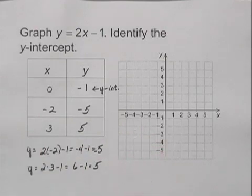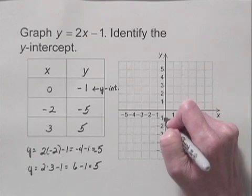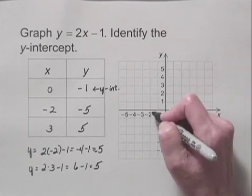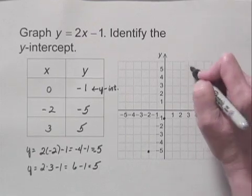Now let's plot these points and draw the graph that contains them. I have 0, negative 1, and I have negative 2, negative 5, and I have 3, 5.